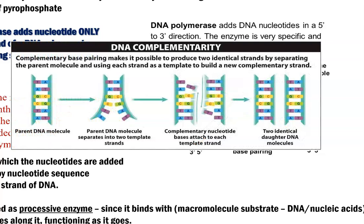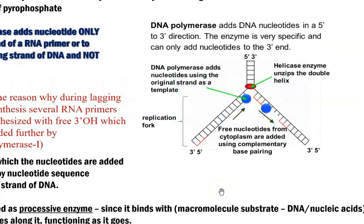The nucleotides are added based on the complementary base pairing principle. For example, if A is present as a nitrogenous base in the parental strand, then T will be added to the new strand. This is the meaning of complementary base pairing. So DNA polymerase adds nucleotides using the original strand as a template.